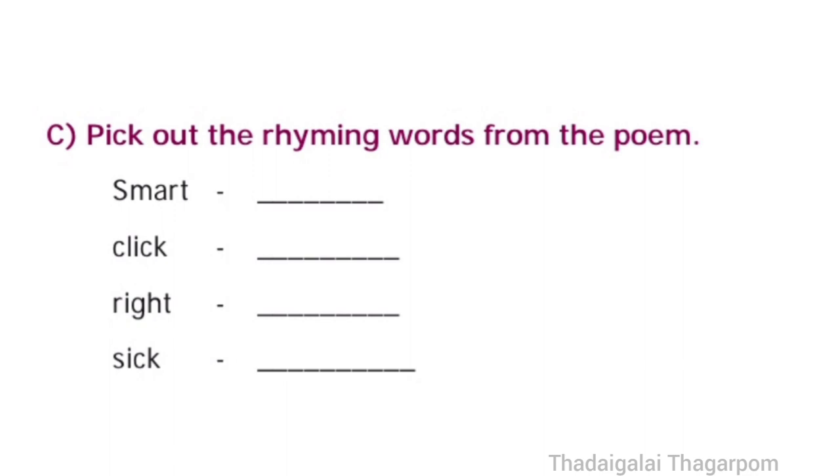Next, C, pick out the rhyming words from the poem. First one, smart. The rhyming word is heart. Second one, click. The rhyming word is quick.